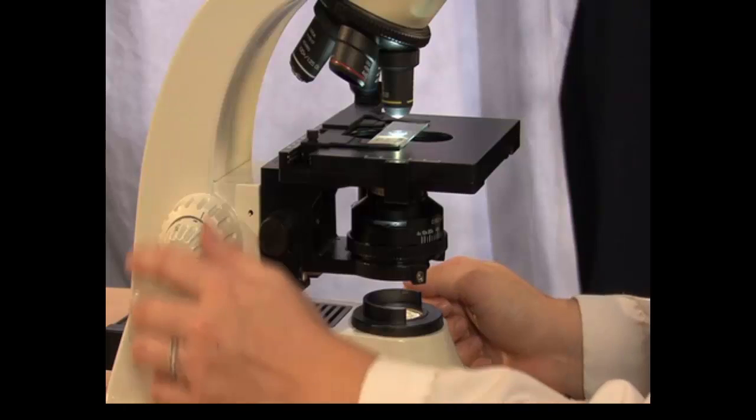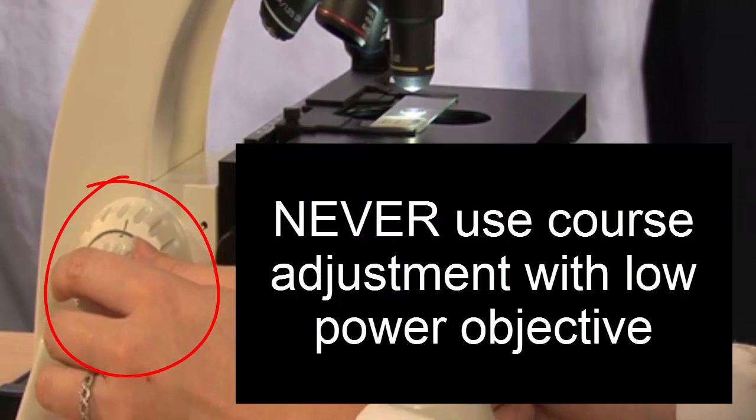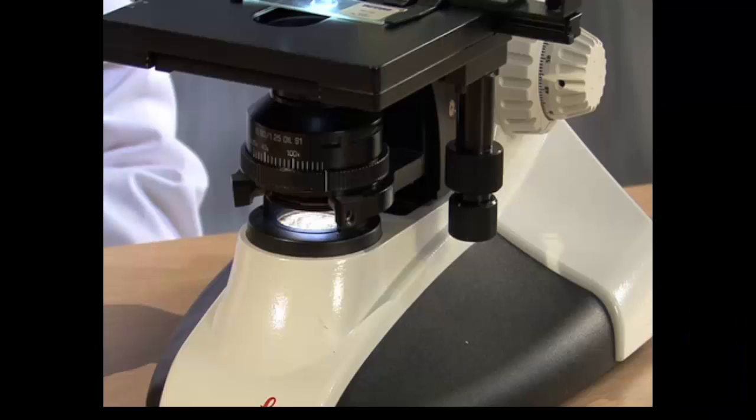To get a sharp, crisp image, use the fine adjustment knob only. Never use the coarse adjustment knob with this objective. If you need more contrast, you will have to adjust the light accordingly. Finally, adjust your letter E so that it is in the center of your field of view using the stage adjustment knobs.